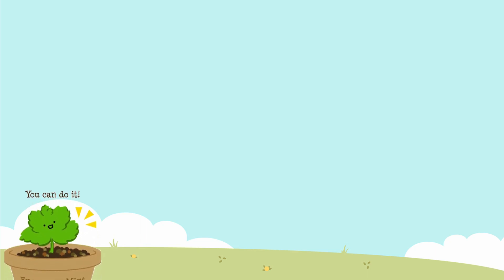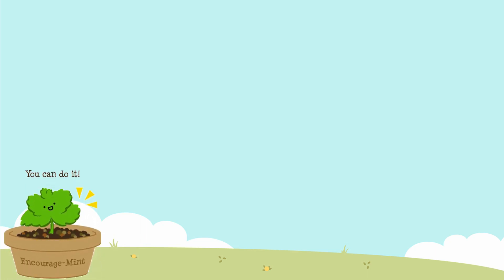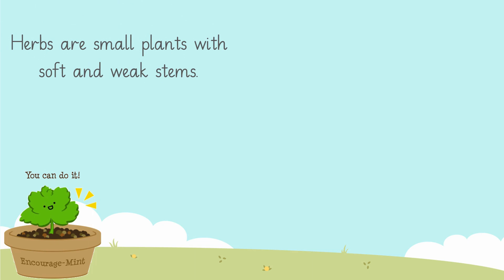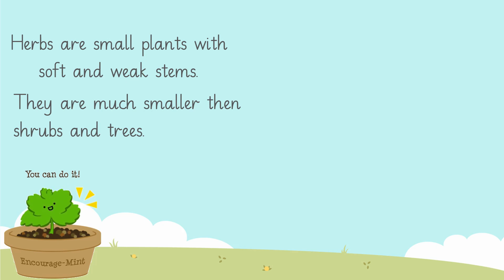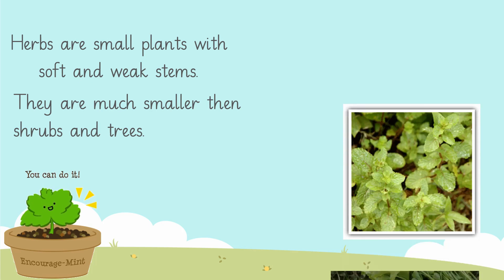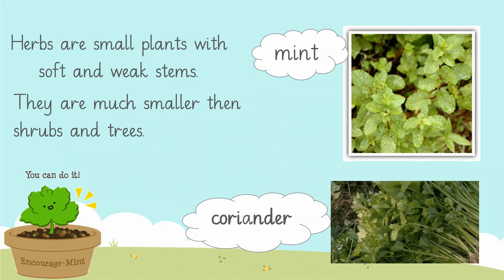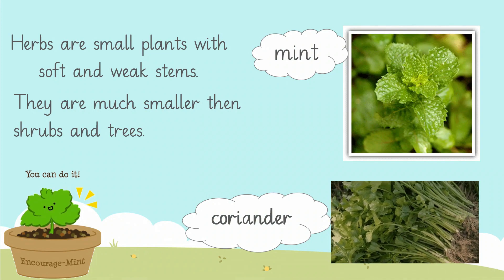Let's learn about another type of plants, which are called herbs. Herbs are small plants with soft and weak stems. They are much smaller than shrubs and trees. Do you know any examples of herbs? Mint and coriander are the examples of herbs.